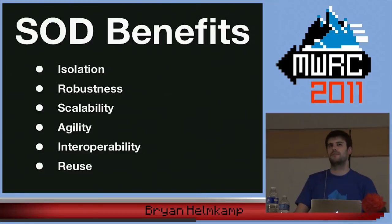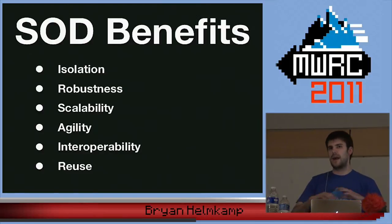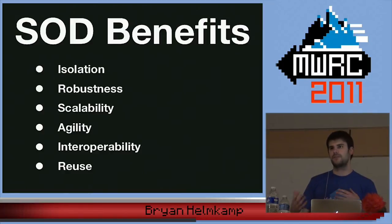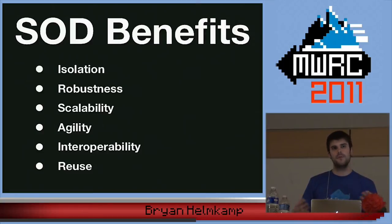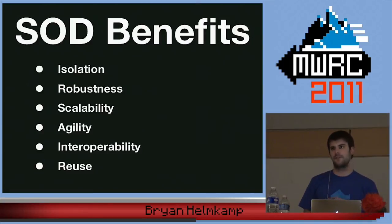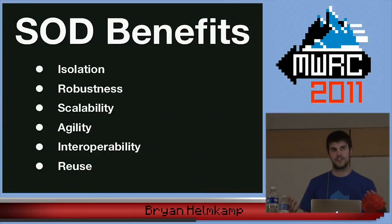Robustness. This is kind of like the encapsulation principle. If you have a well-defined API — HTTP, REST, JSON — you can change out anything going on under the hood without having to modify any of the clients. In that way, your service-oriented design is considered robust to change.